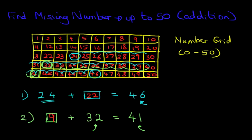So those are the missing numbers. And that is how we use the number grid when we are trying to find the missing number with numbers up to 50 for addition questions.